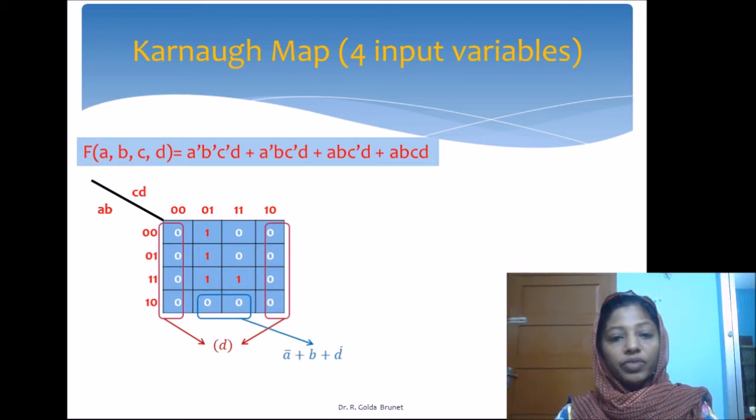Not necessary, because we have zeros in adjacent cells. We know that x+x equals x, and we can exploit this by grouping all four zeros together to form a bigger block. Although these two zeros are already covered in some group, we can reuse these cells.